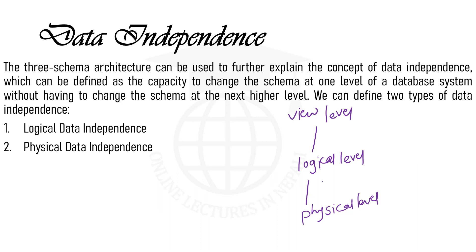We will talk about what data is stored and what kind of relationships exist between them. Constraints are conditions applied by rules and applied to data. At the view level, multiple views are available according to the role of the user.